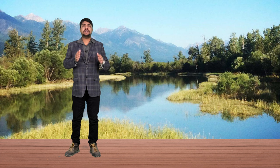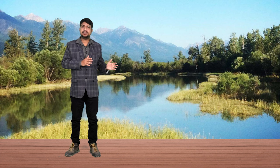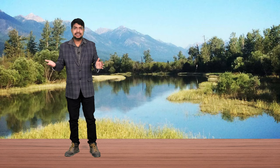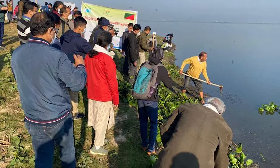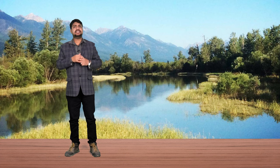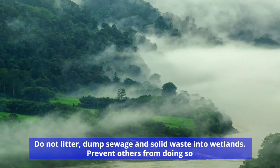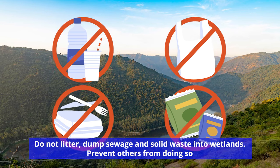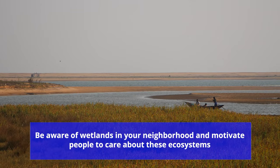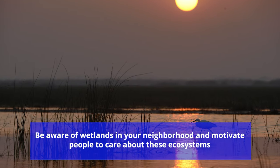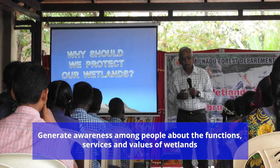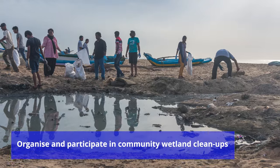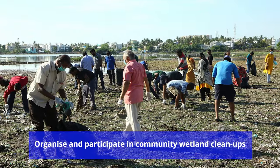Wetland conservation requires conservation and management actions from stakeholders and diverse strata of society. There are many ways in which citizens can engage in wetland conservation and management. Do not litter, dump sewage or solid waste into the wetland, and prevent others from doing so. Be aware of wetlands in your neighbourhood and motivate people to take care of these ecosystems. Generate awareness among people about the functions, services and values of wetlands. Organise and participate in community wetland cleanups.